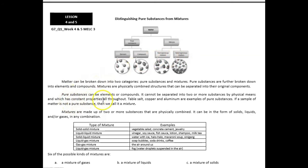Pure substances can be elements or compounds. It cannot be separated into two or more substances by physical means and which has constant properties all throughout. Table salt, copper, and aluminum are examples of pure substances. If a sample of a matter is not a pure substance, then we call it a mixture.